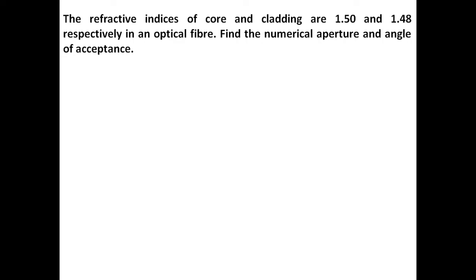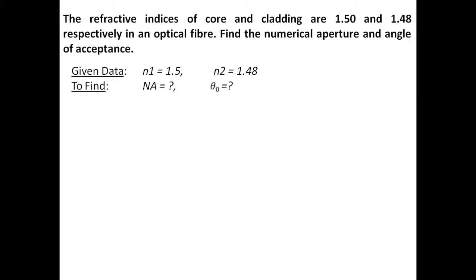For this, write down the given data as soon as a question is asked. Then think about what parameters need to be found out, and finally solve the problem and write down the summary. The given data is: refractive index of core N1 = 1.5, and refractive index of cladding N2 = 1.48. You have to find the numerical aperture and angle of acceptance. Sketch a small diagram so you can understand what needs to be done.